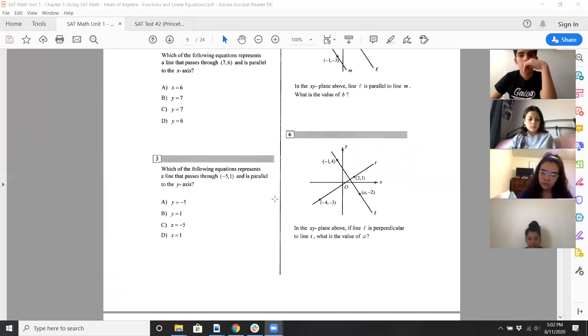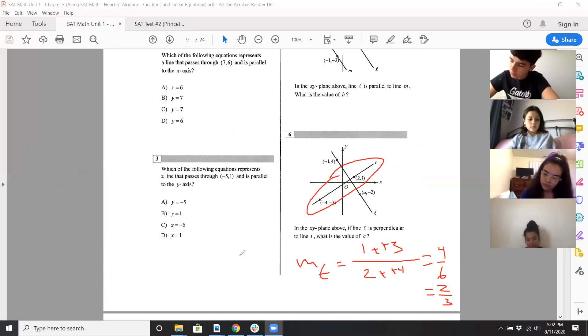Six, they want the value of a, so we'll need to find the slope of the, of y and t, which is again change y or change in x, one minus negative three over two minus negative four. So positive, positive, positive, positive, four, six or two thirds. But guess what? The slope of l is flipped, negative three over two. So you do four minus negative two